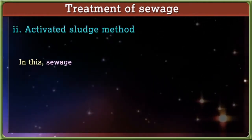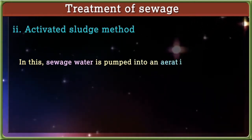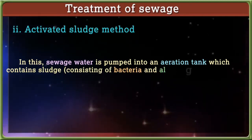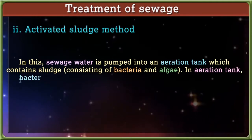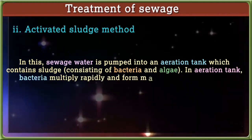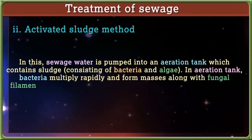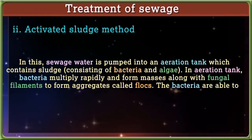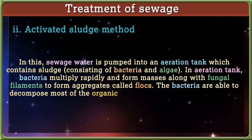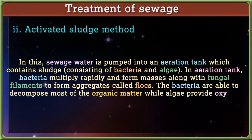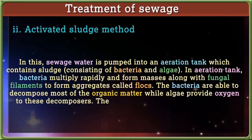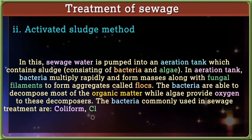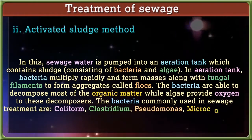2. Activated sludge method: Sewage water is pumped into an aeration tank which contains sludge consisting of bacteria and algae. In the aeration tank, bacteria multiply rapidly and form masses along with fungal filaments to form aggregates called flocs. The bacteria are able to decompose most of the organic matter, while algae provide oxygen to these decomposers. Bacteria commonly used in sewage treatment are coliform, Clostridium, Pseudomonas, Micrococcus, etc.